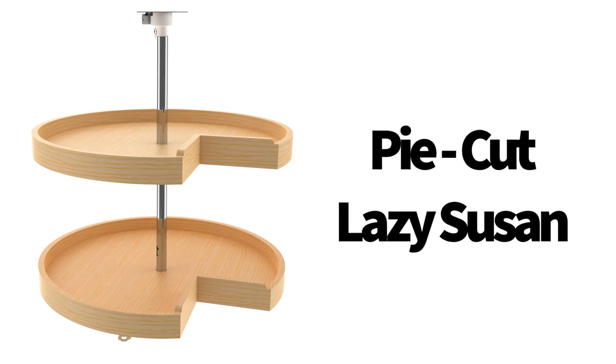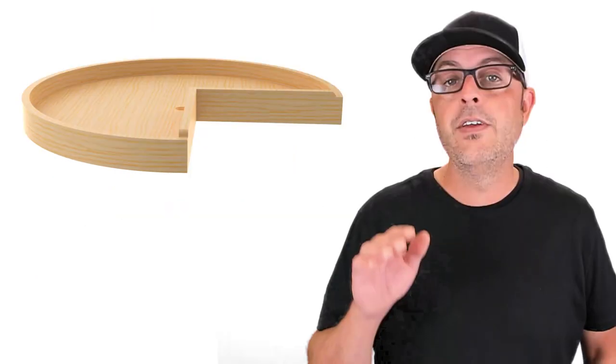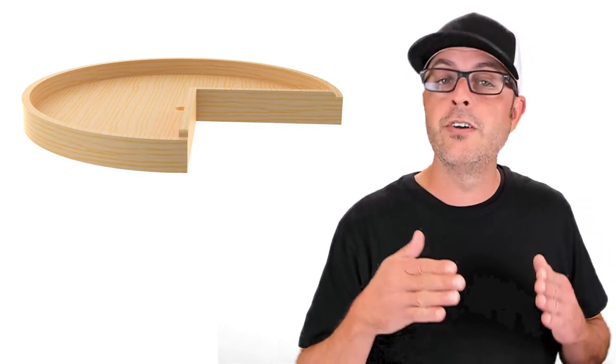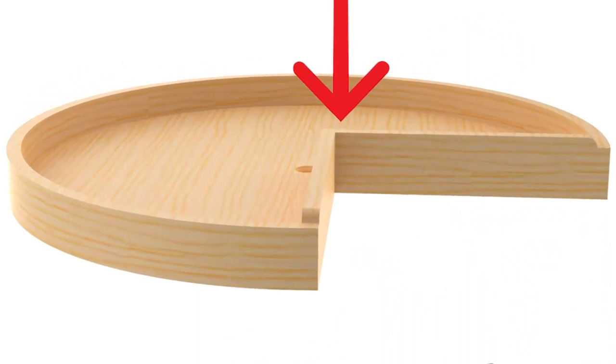Number two on the list is the pie cut Lazy Susan. These are very similar to the kidney but the pie cut has a much stronger 90 degree angle as you see here.